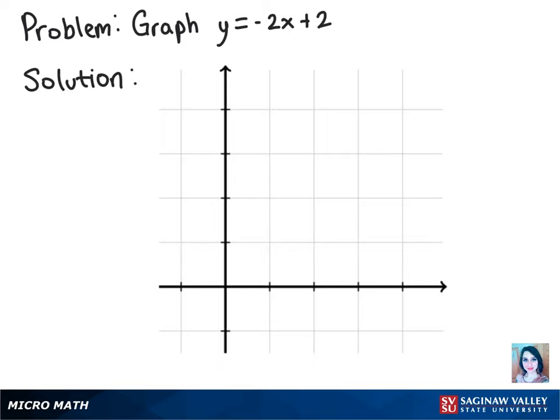We want to graph the line with the equation y equals negative 2x plus 2. We know that this is in slope-intercept form, which means that our slope m is negative 2, and our y-intercept b is positive 2.